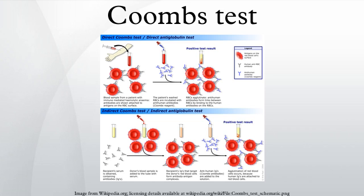The indirect Coombs test is used in prenatal testing of pregnant women and in testing blood prior to a blood transfusion. It detects antibodies against RBCs that are present unbound in the patient's serum. Serum is extracted from the blood sample taken from the patient, then the serum is incubated with RBCs of known antigenicity — that is, RBCs with known reference values from other patient blood samples. If agglutination occurs, the indirect Coombs test is positive.